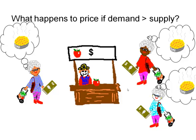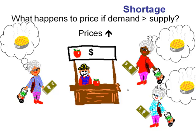What happens to price if demand is greater than supply? When demand is greater than supply, this is called a shortage. Imagine a situation where three grannies show up at the market intent on making apple pies tonight, but they find there's only one apple left. What may happen is a bidding war where the highest price gets to purchase the apple. This is going to cause prices to go up — so when there's a shortage, prices will increase.